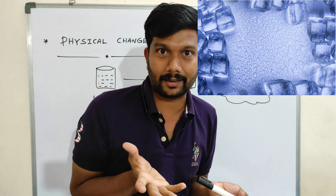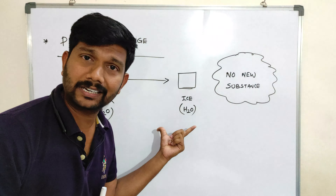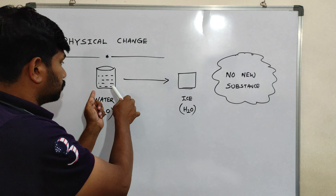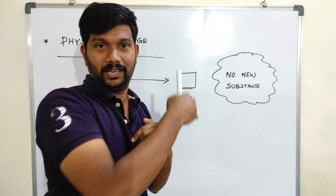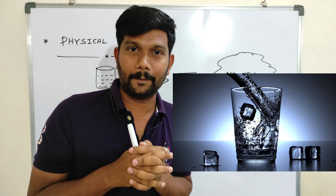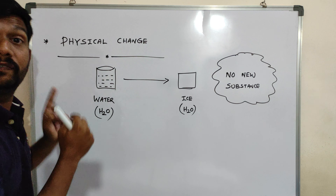Let's see — is this a physical change or a chemical change? This is a physical change because after the change happens, there is no new substance formed. So we can say that water changing into ice is an example of physical change. Water is a liquid substance and ice is a solid substance. But if you study closely, in both water and ice there are hydrogen and oxygen molecules — it's just the shape and property that changes. There is no new substance formed.